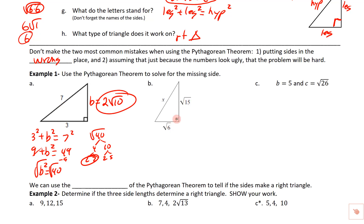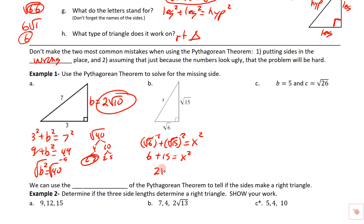On this one, notice the right angle — what we're missing is the hypotenuse, represented by x. The legs are square root of 6 and square root of 15. So leg squared plus leg squared equals hypotenuse squared: square root of 6 squared plus square root of 15 squared equals x squared. The squaring undoes the square root, giving 6 plus 15 equals x squared, so 21 equals x squared. Taking the square root, x equals the square root of 21. Since 21 factors to 3 and 7 with no pairs, this doesn't simplify further.